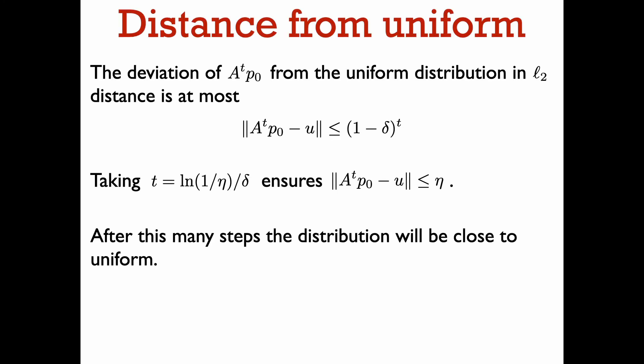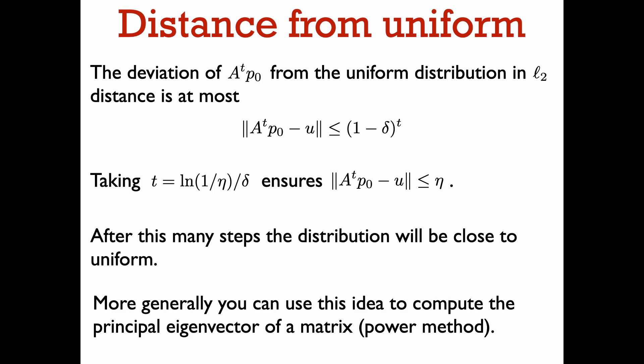More specifically, if we run the walk for a number of steps proportional to 1/delta, then the deviation from the uniform distribution becomes a small constant. And we can get as close as we want to the uniform distribution by running the walk for log(1/eta)/delta many steps, in which case our deviation from the uniform distribution in L2 norm becomes at most eta. The same kind of idea is used in what's called the power method to compute the principal eigenvector of a matrix. If this matrix has a spectral gap, then starting with a random vector that has some overlap with the principal eigenvector, repeatedly applying A will converge to the principal eigenvector of A.